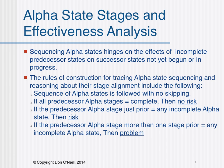Sequencing alpha states hinges on the effects of incomplete predecessor states on successor states not yet begun or in progress. The rules of construction for tracing alpha state sequencing and reasoning about their stage alignment include the following. Number one, sequence of alpha states is followed with no skipping. Number two, if all predecessor alpha states equal complete, then no risk. Number three, if the predecessor alpha stage just prior is equal to any incomplete alpha state, then there is risk. If the predecessor alpha stage more than one stage prior equals any incomplete alpha state, then there is a problem.